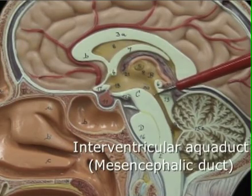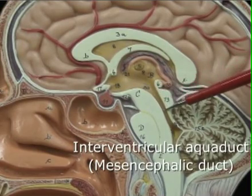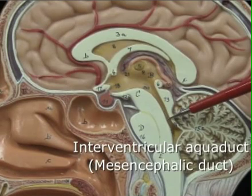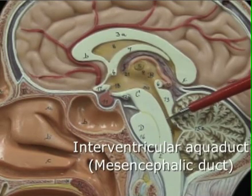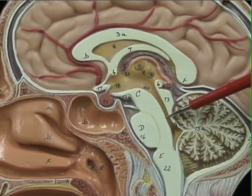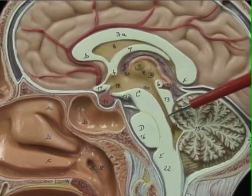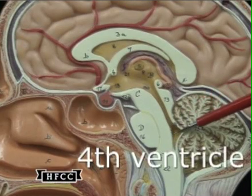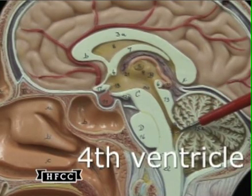This groove here is the interventricular aqueduct, or aqueduct of Sylvius as some call it, or mesencephalic duct — connecting fluid from the third to the fourth ventricle. That fourth ventricle is a small chamber right there.